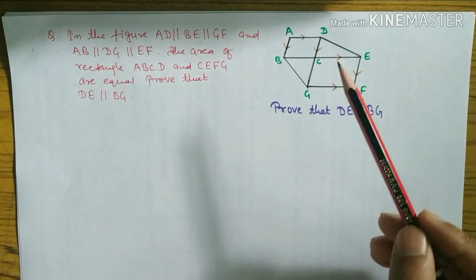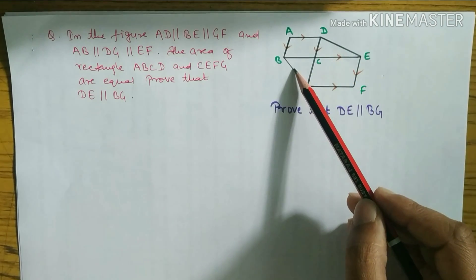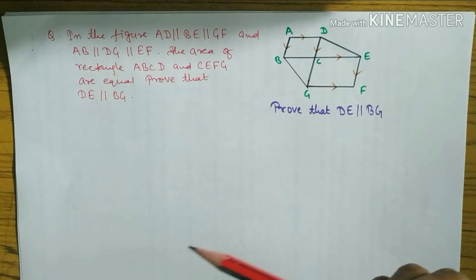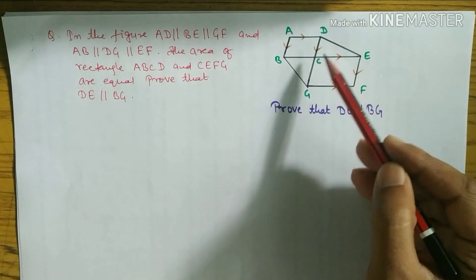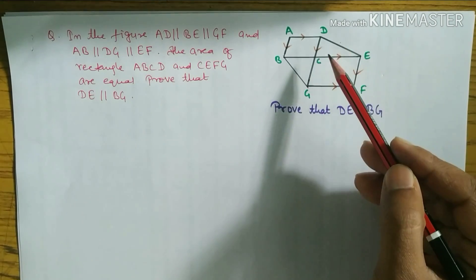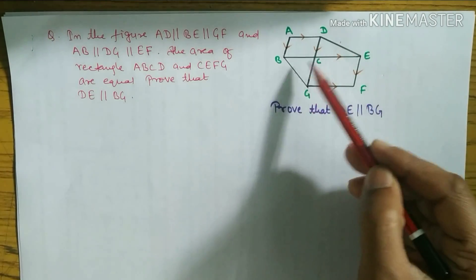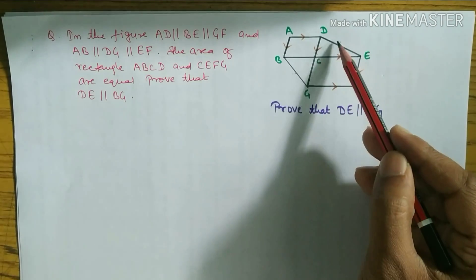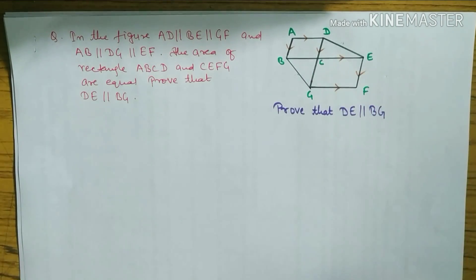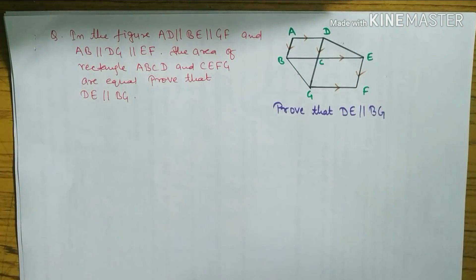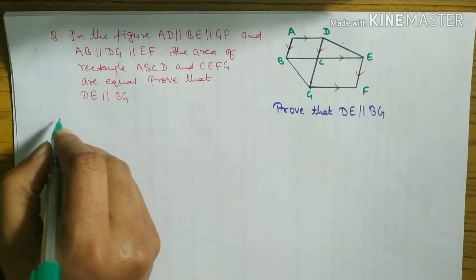Now we have to prove that DE and BG are parallel. It means we have to show that two triangles are equal between these two lines. If we can show that two triangles are equal between these two lines, it means these two lines are parallel. So our aim is to show two triangles are equal between these two lines. For this we need a construction also.